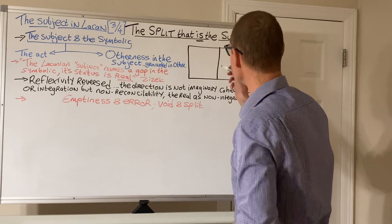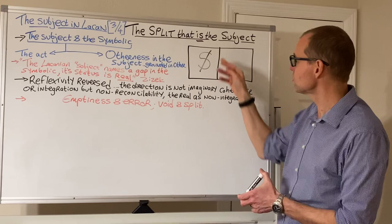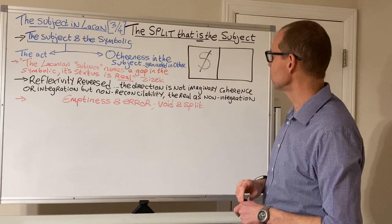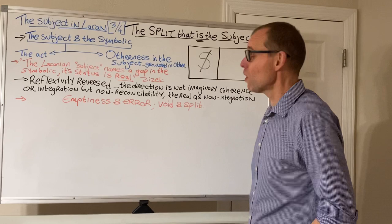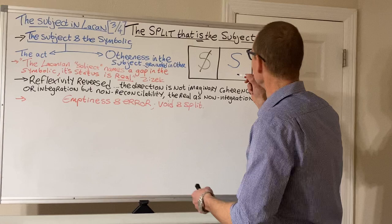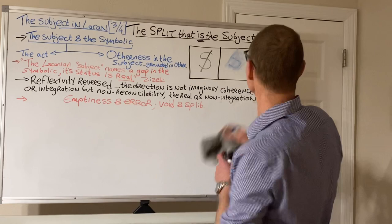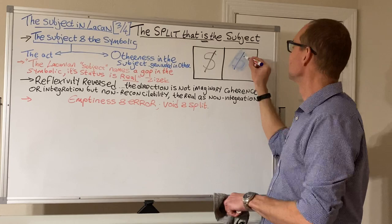What we can do in a nice opening gesture is rather than depict the Lacanian subject in this way — this is the famous barred S, the symbol, the algebraic way that Lacan evokes this idea of the barred subject — rather than drawing the S and then putting the bar through it, what we should in fact do is rather put the bar first and then the subject.